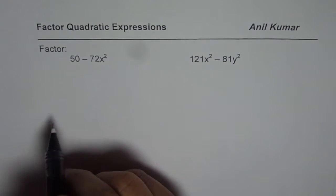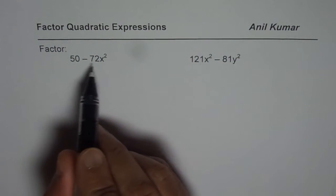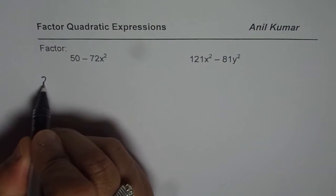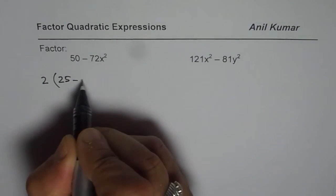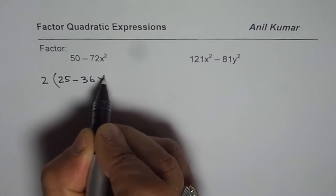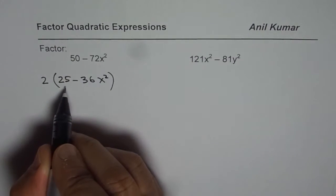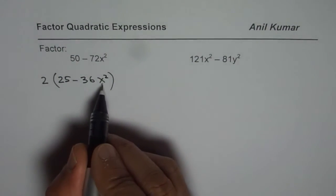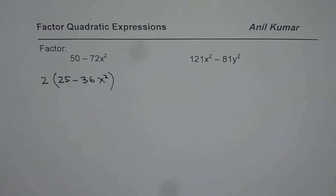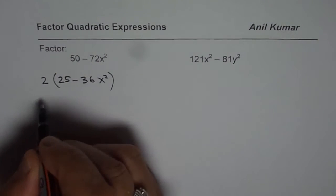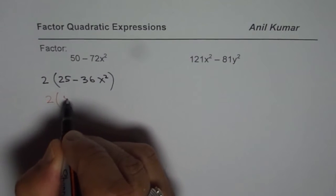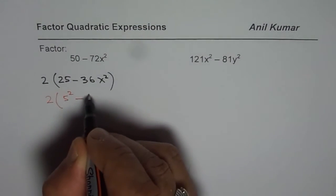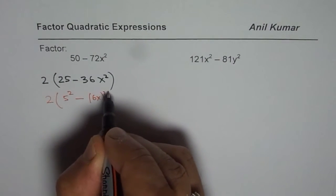In the very first one we could factor it using difference of squares but 50 is not a perfect square. What happens if I take two common? So let's take two as a common factor. We get 25 minus 36x squared. Now you can see 25 is 5 squared and 36x is 6x squared.